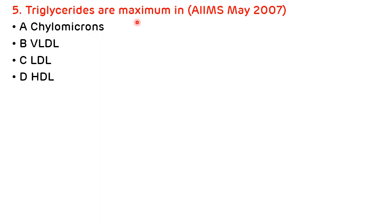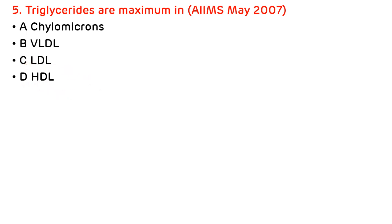Fifth question: triacylglycerols are maximum in which lipoprotein? Asked in AIIMS May 2007. Options are chylomicrons, VLDL, LDL, and HDL. The highest amount of triacylglycerol is present in chylomicrons, the lowest is in HDL, and the highest cholesterol is in LDL. So the correct answer is A, chylomicrons.